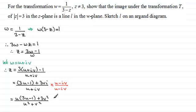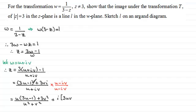For the imaginary part, putting i outside a bracket, the imaginary parts are: u times 3v, giving 3uv, and also minus iv times all of 3u minus 1 — since we already have the plus i out the front, it's just minus v times 3u minus 1. Again, that's all over the denominator u squared plus v squared.